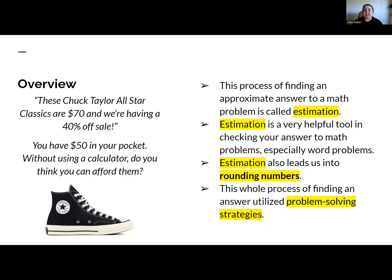This process of finding an approximate answer to a math problem is called estimation. Estimation is something you probably do a lot, especially when it comes to things that cost money. It's a very helpful tool in checking your answer to math problems, especially word problems. Estimation also leads us into rounding numbers, which we'll get into today. This whole process of finding an answer utilizes problem solving strategies.